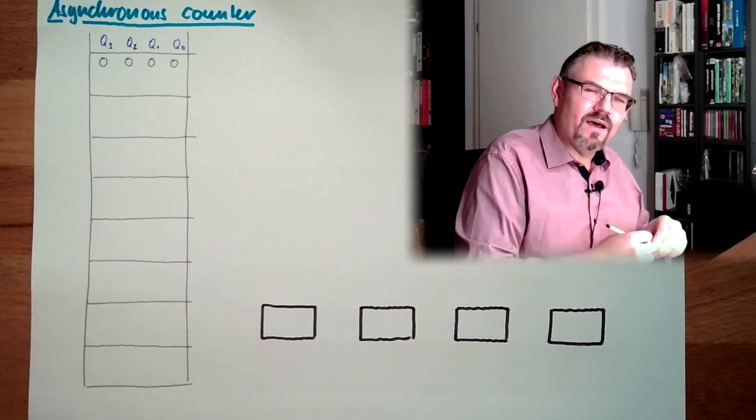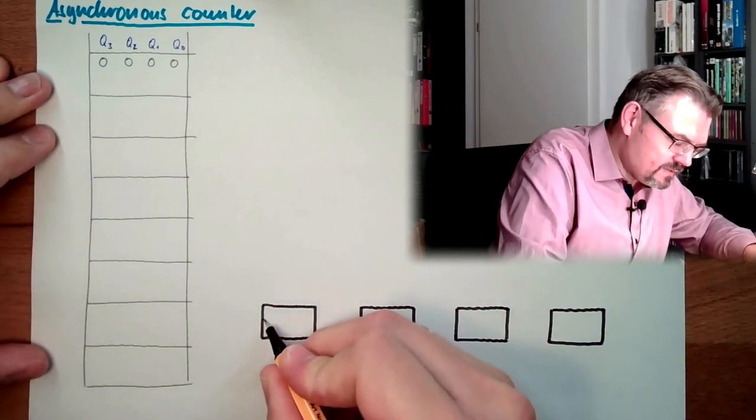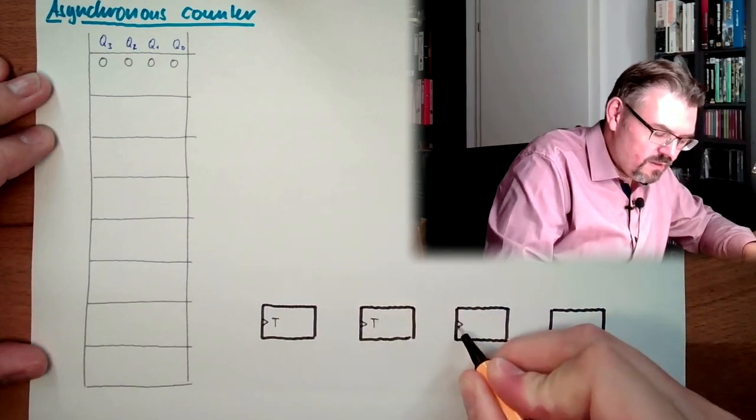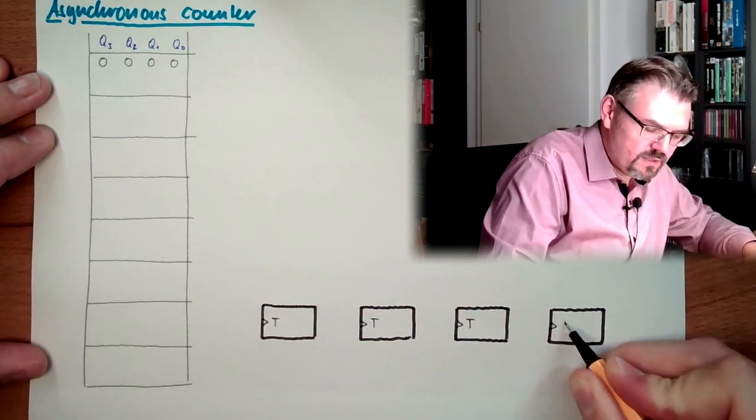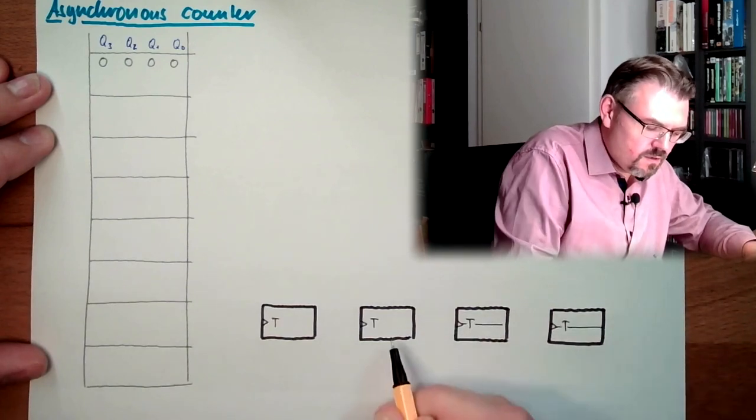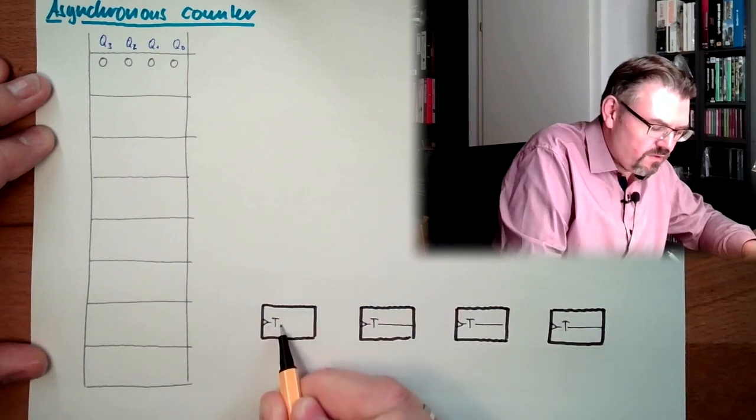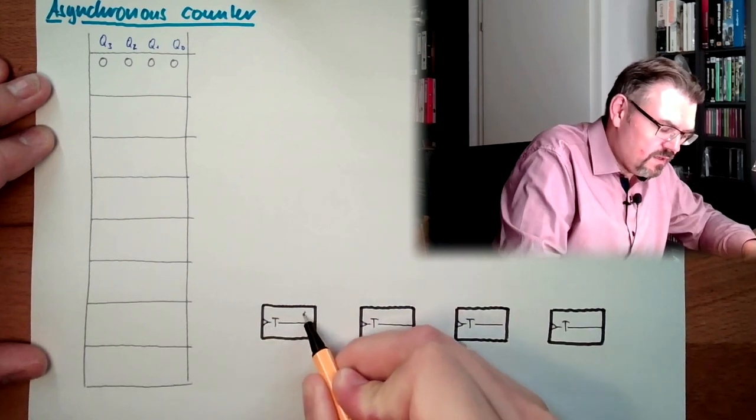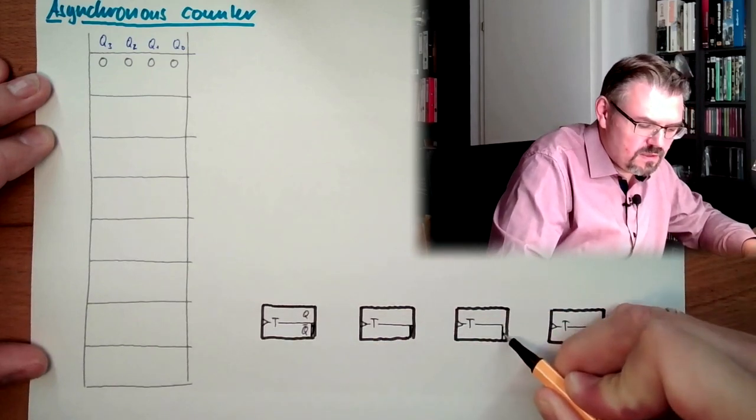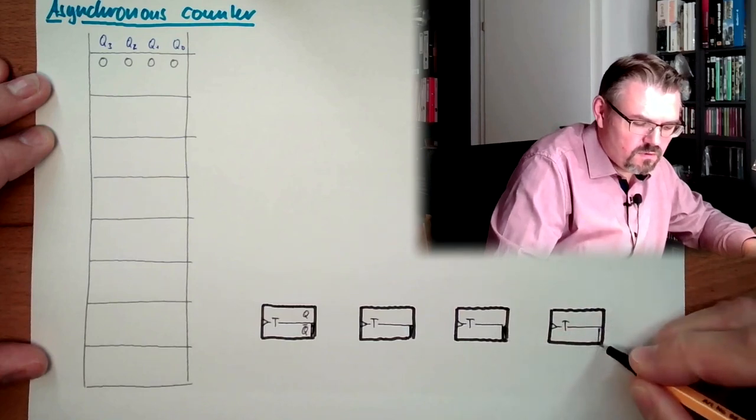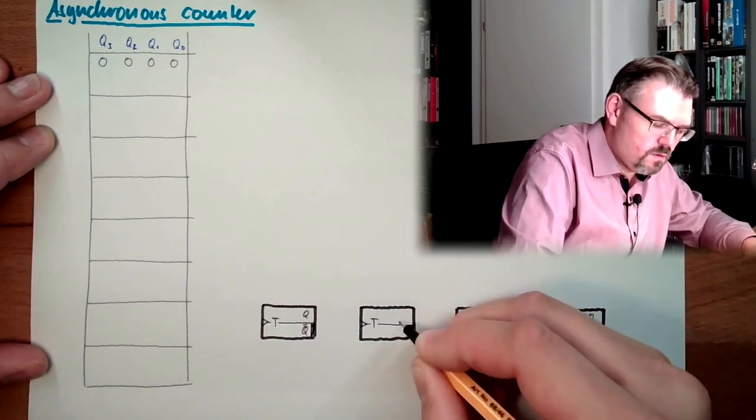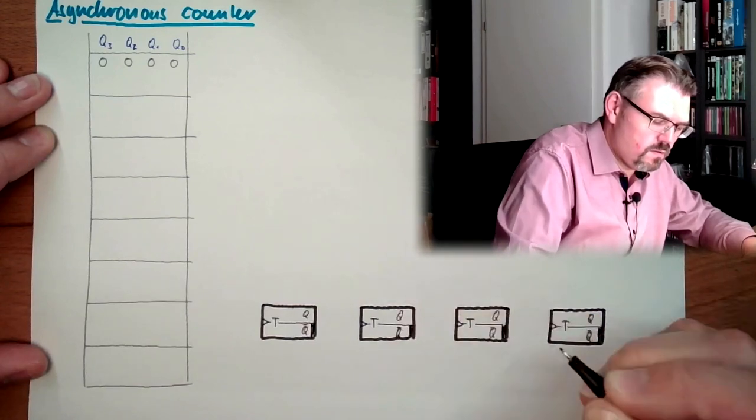They do have, I call it now a T, a toggling input, an impulse input. This is a T input. With this input, those are toggling simply. With every rising edge, these flip-flops are toggling from one state to the other. So we have a Q and not Q. This is the main always, this is the default position, Q, not Q.